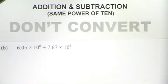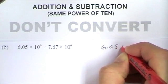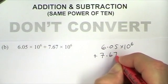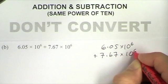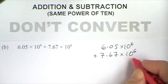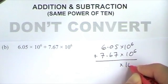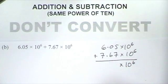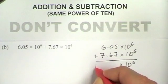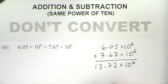The second example: 6.05 times 10 to the 6 plus 7.67 times 10 to the 6. Again, the powers of 10 are the same — both 10 to the 6 — so I can add them together and I'm going to get something times 10 to the 6. Adding 6.05 and 7.67 gives me 13.72 times 10 to the 6.